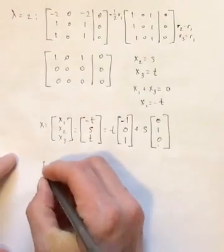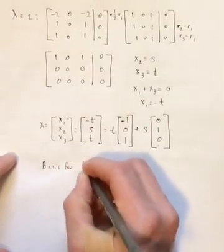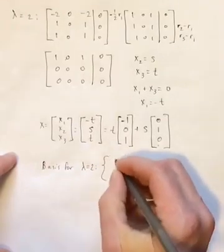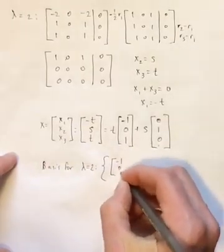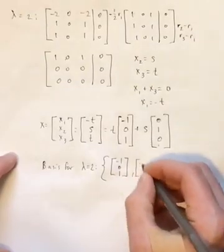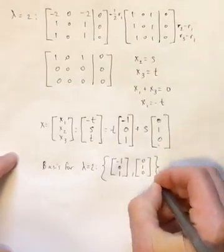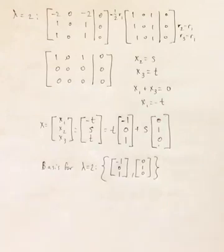So we can say then that the basis for lambda equals 2 consists of the vectors negative 1, 0, 1, and the vector 0, 1, 0. Either one of these can be replaced by a constant multiple of itself. But of course, at this point, we would just be doing that work, not for any good reason. But if you just happen to reduce differently than I did, it may be the case that you end up with a slightly different answer for what the basis vectors are. So hopefully that makes sense. And if you have any questions, please let me know.